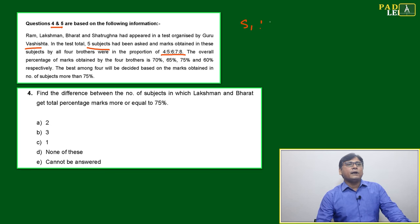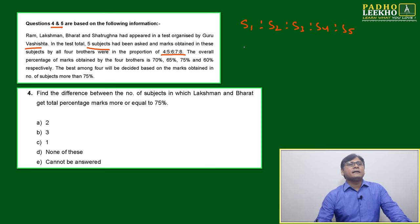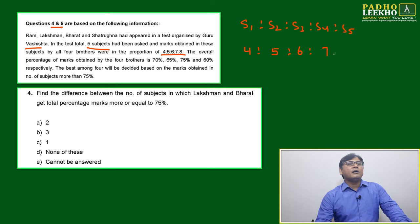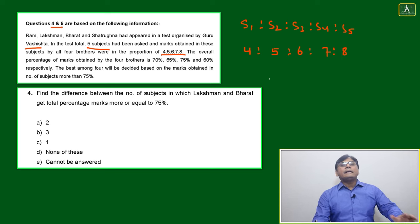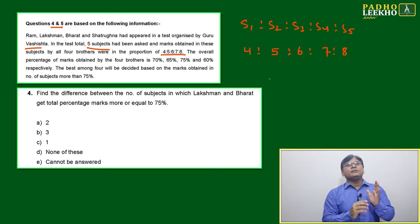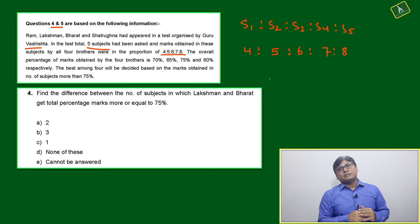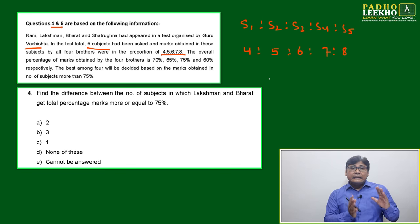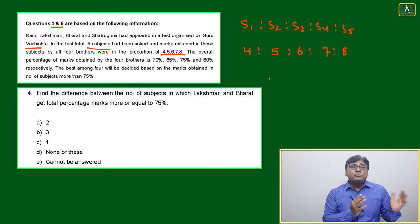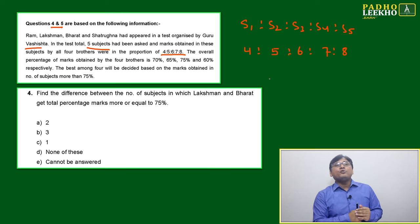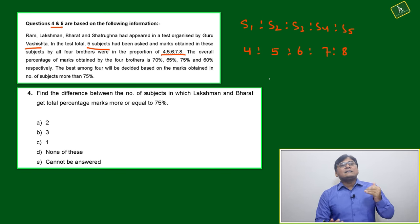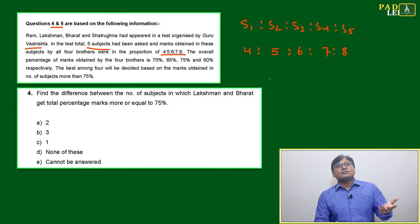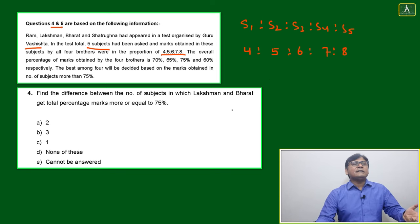Five subjects are there. Whether it is Ram, Lachman, Bharat, or Satrugna, all are getting the same ratio in their scoring across five subjects. The exact score won't be the same — the relative proportion is same. The proportion in five subjects is the same for all four brothers, that is 4:5:6:7:8. Now how to differentiate them — we read one more line.